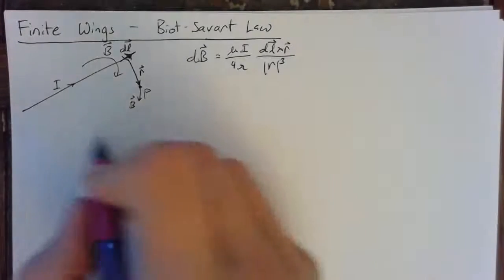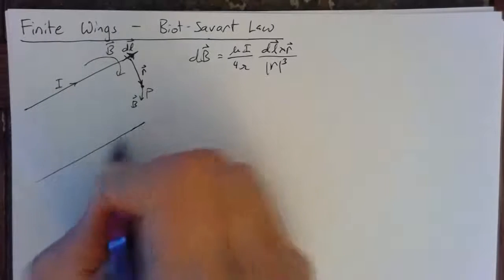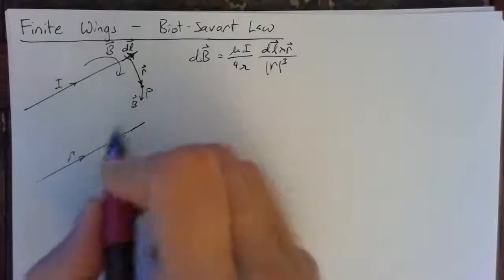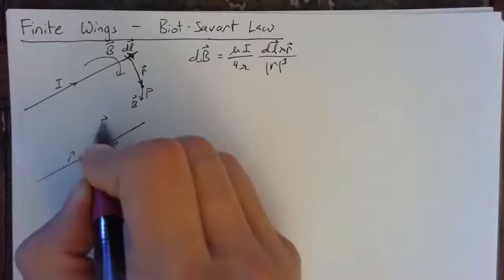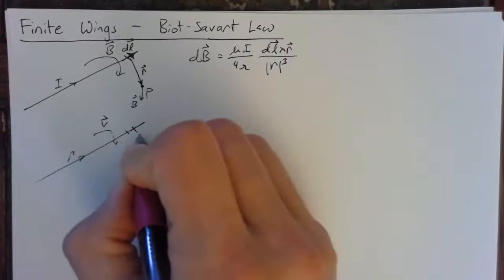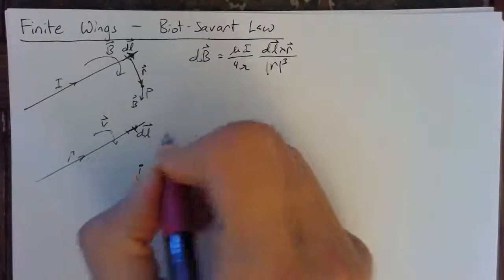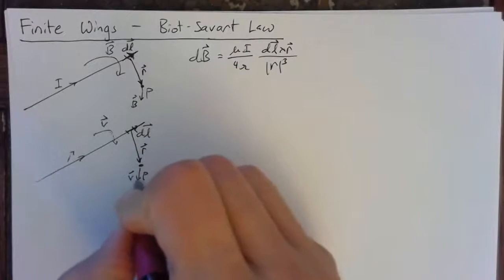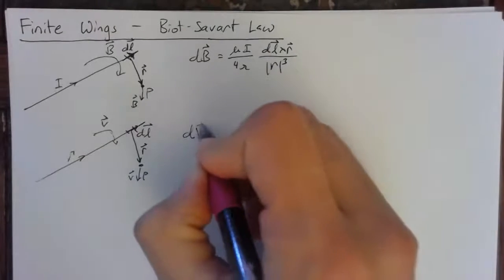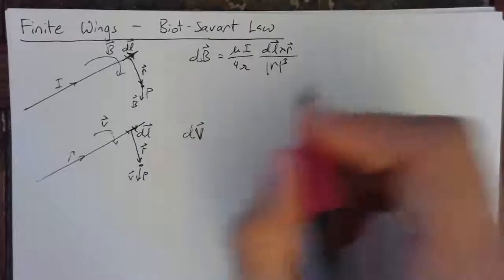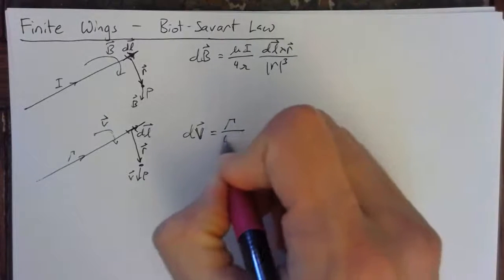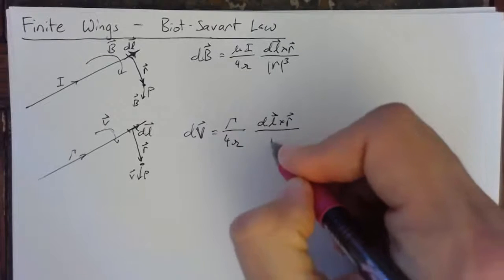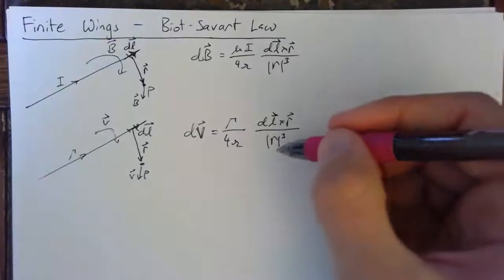We have a very similar situation. We have a vortex filament with some strength gamma, and we want to analyze the velocity at a point P, which is due to the velocity field created by this vortex filament. We can look at an infinitesimal segment of this vortex filament that is some distance R away from our point P. The differential piece of velocity generated is going to be gamma over 4π times DL crossed with R, all over R cubed.